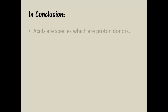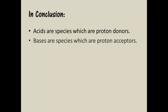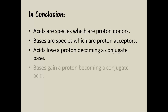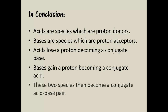So that's it for now. To summarise: acids are species which are proton donors, bases are species which are proton acceptors. Acids lose protons to become a conjugate base, bases gain a proton to become a conjugate acid, and the two species then become a conjugate acid-base pair which differ only by one hydrogen ion. You should pause the video at this point and copy these outcomes out. You should also go back and find one example of a conjugate acid-base pair to include, and write out one acid-base proton transfer reaction as an example. In the next video, we will look at what pH actually is and how to calculate the pH of an acidic or alkaline solution.